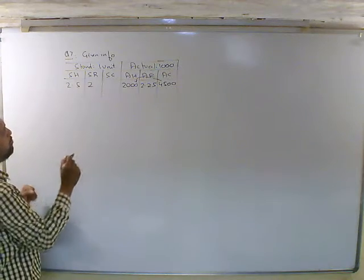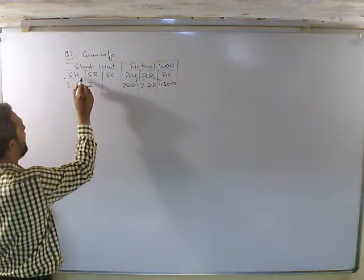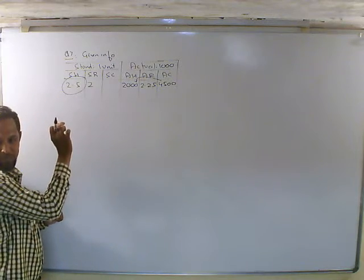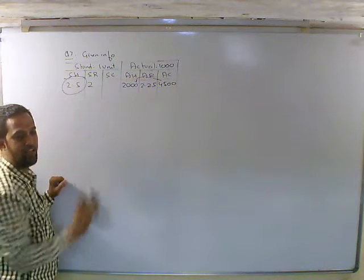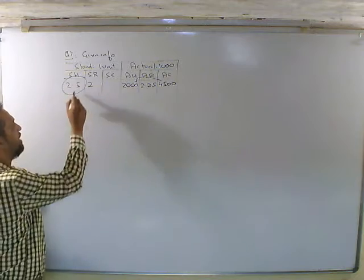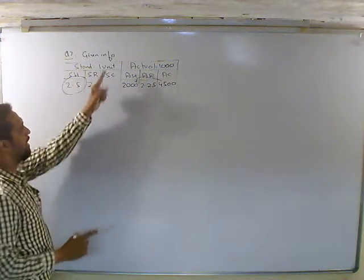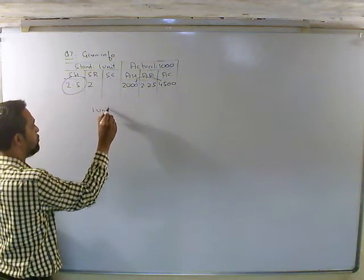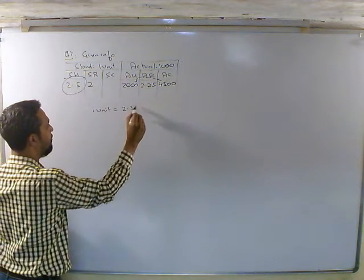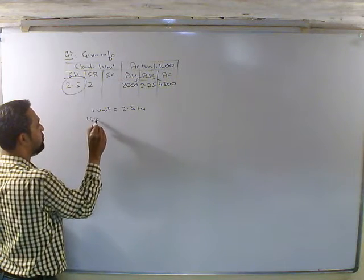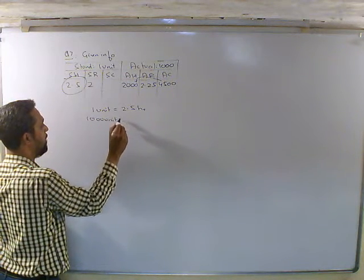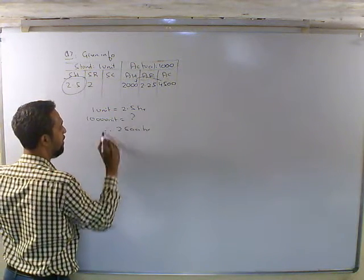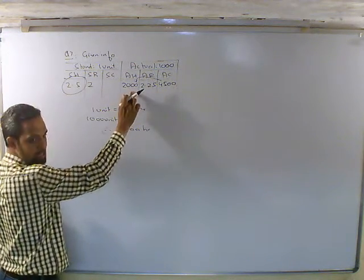अब इस पूरे concept में standard hour को change करेंगे. Standard hour ही बदलता है, बाकी सब as it is रहेगा. 2.5 घंटे जो दिए हैं वो एक unit के लिए हैं, तो 1,000 units के लिए 2,500 hours लगेगा.